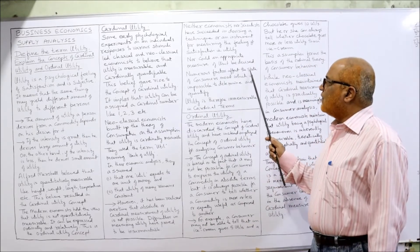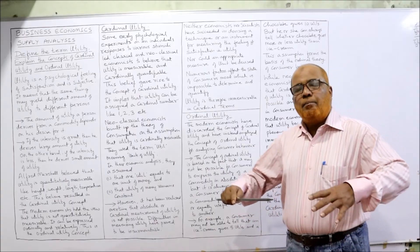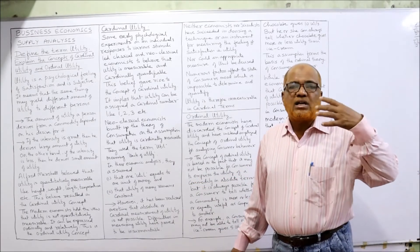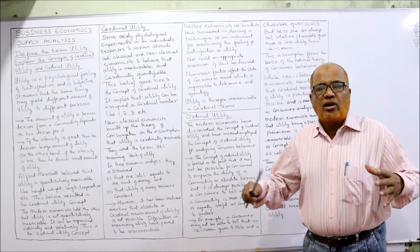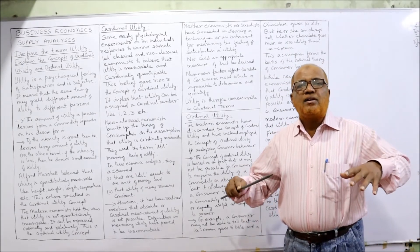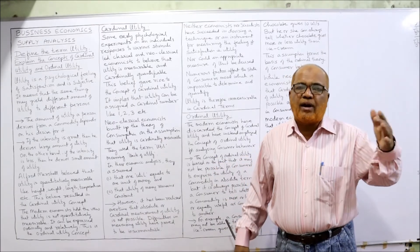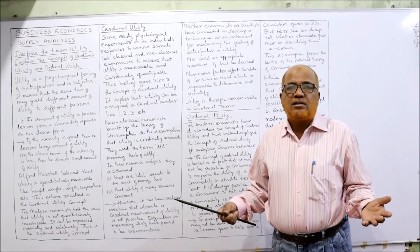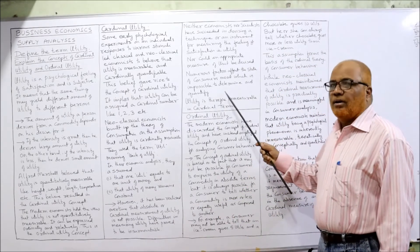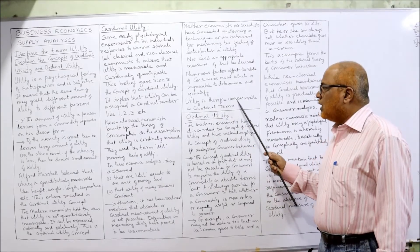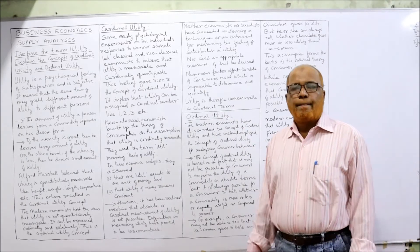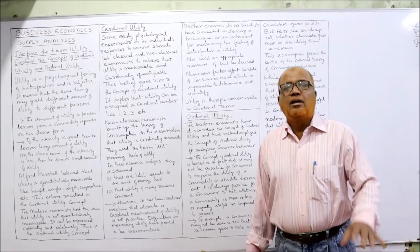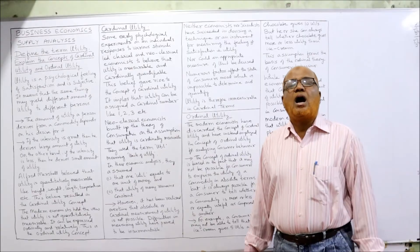Numerous factors affect the state of a consumer's mood — the psychological feeling of the consumer does not remain the same. The same person will get different utility at different points of time from the same goods. So it is highly difficult to measure utility, which is practically impossible to derive. Therefore, utility is immeasurable in cardinal terms, and the modern economist says it is highly difficult to measure utility in cardinal terms.